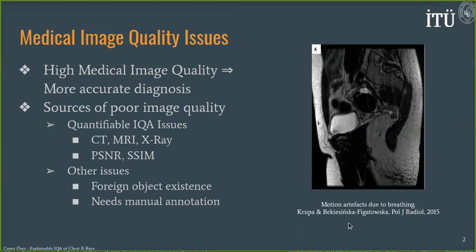In addition, there may be other causes of image quality issues, such as foreign object existence, which I will be discussing later on. These types of problems may require in-depth analysis by manually annotating the regions causing the problem.